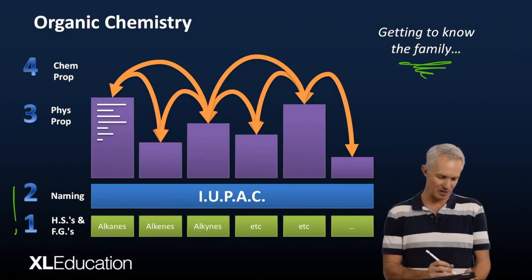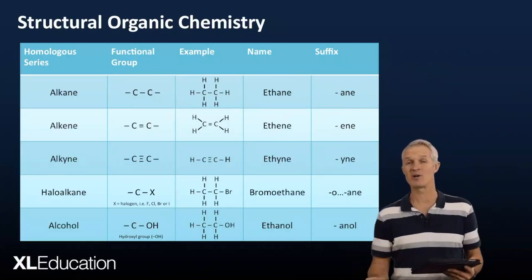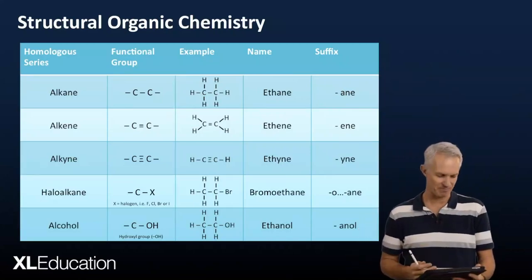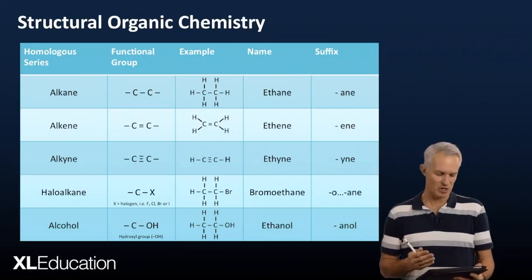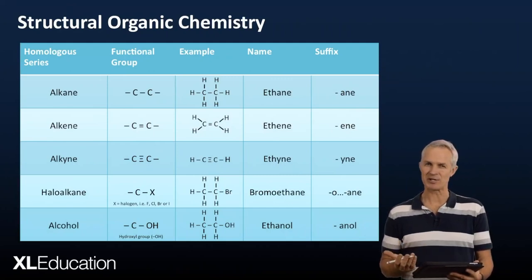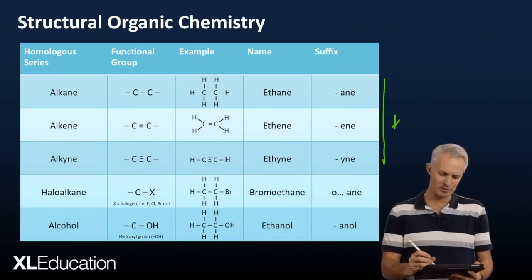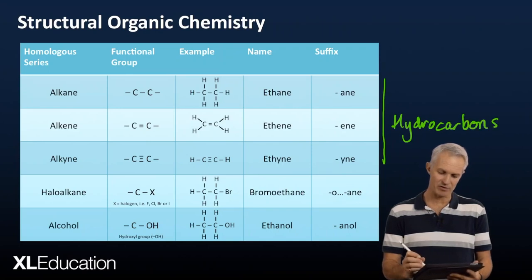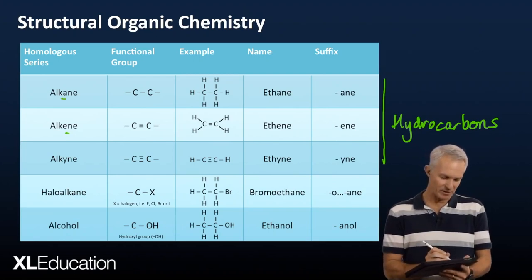Now we're going to kick off with these bottom two layers here, which is structural organic chemistry, getting to know our homologous series and naming and so on. So I'm just going to quickly go through the table. I'm sure you've got a table like this in your notes, or you can pause and watch the video again. But we've got nine different homologous series that we need to get to know. The first three we call hydrocarbons. Those hydrocarbons are called that because they just have hydrogen and carbon. So just hydrogen, just carbon. There's no other additives. Then we've got alkanes, alkenes, alkynes.